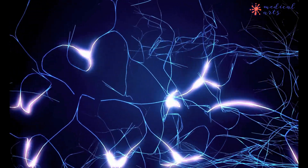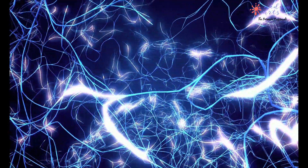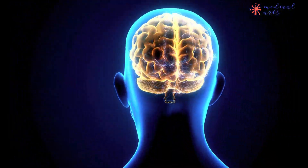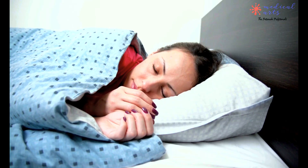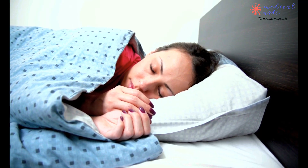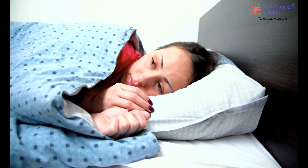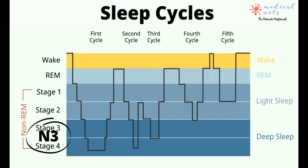REM sleep accounts for a minority of sleep time, yet it has an essential role in physiological homeostasis and cognition. Sleep stages shift in one of two ways: alternatively, arousals will occur, bringing the individual from deeper to lighter sleep or to wakefulness. Sleep is not a homogenous process and appears to go through multiple discrete cycles at night. These cycles occur in fairly typical patterns of non-rapid eye movement and rapid eye movement sleep, with each cycle lasting approximately 90 to 120 minutes.